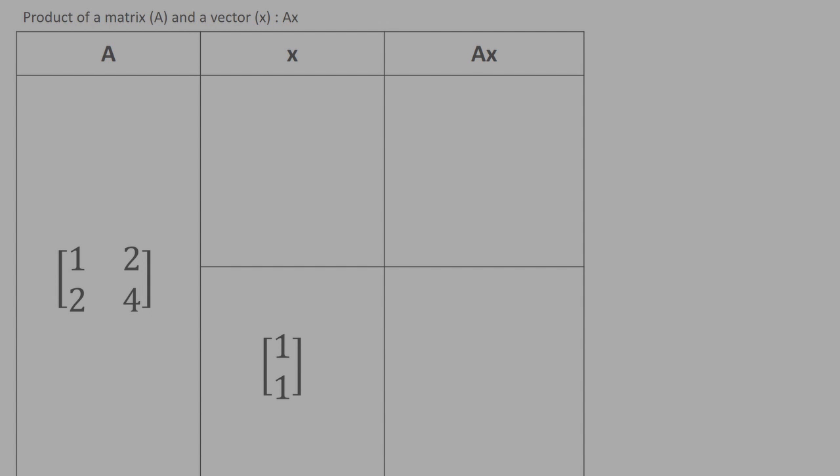In case 1, x is taken as [1,1] and note that Ax will also be a vector. I have plotted them in a graph for easy understanding and interpretation. Now, what is this graph telling you?